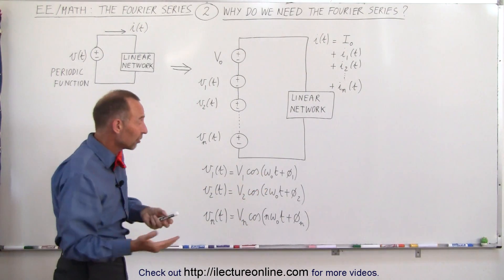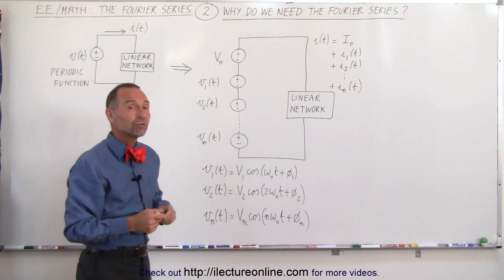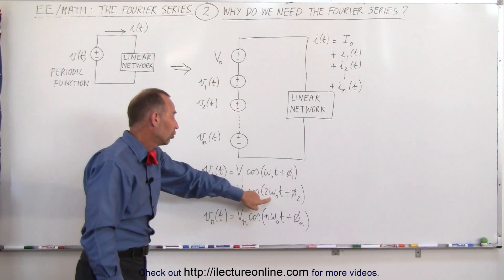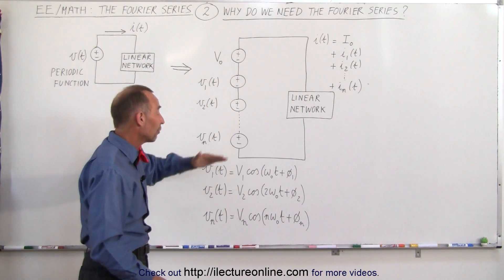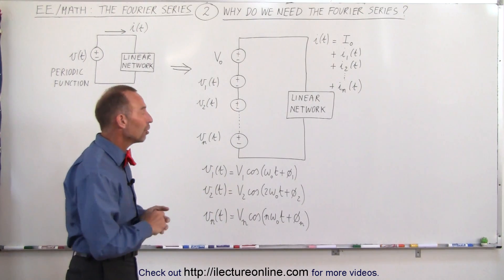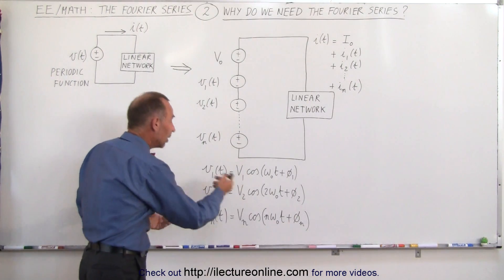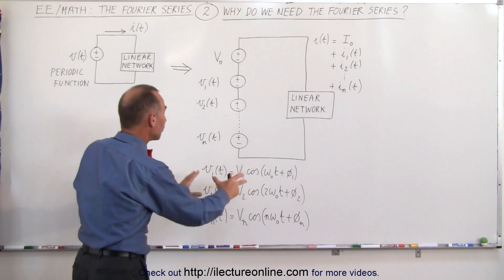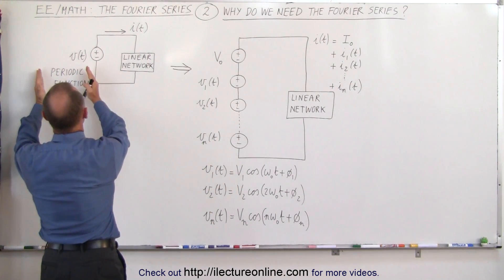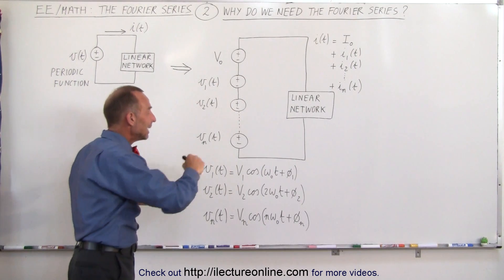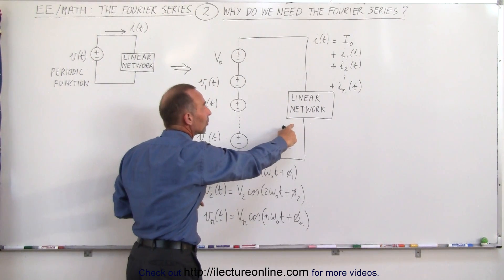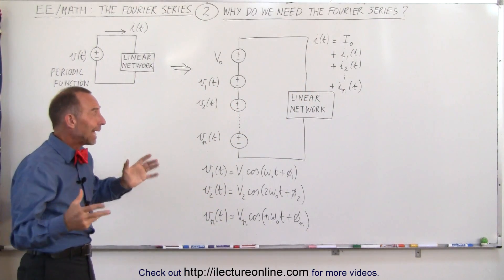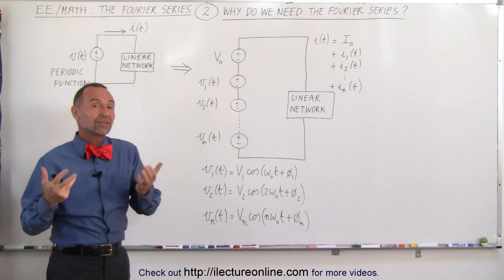Here we have an example of the input voltage in terms of a cosine function — it could be a sine function, or every other odd function. For example, instead of going from omega sub nought to 2 omega sub nought to 3 omega sub nought, it may go 1, 3, 5 as we saw in the previous video. Nevertheless, we'll have a sum of voltage inputs in terms of trigonometric functions — the Fourier series representation of the original non-trigonometric periodic function — and each will contribute to driving the linear network, resulting in an infinite number of currents that we simply add together.